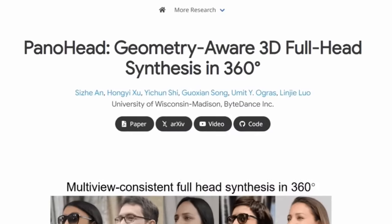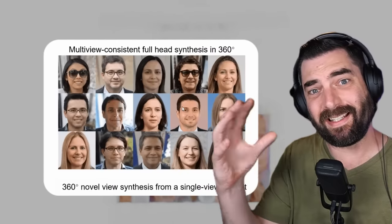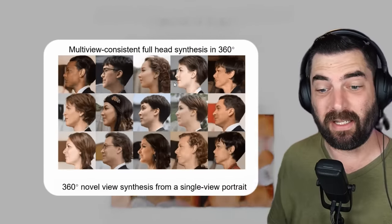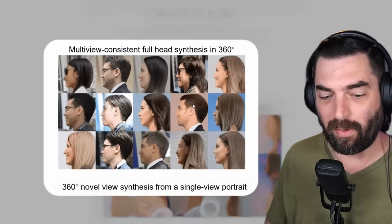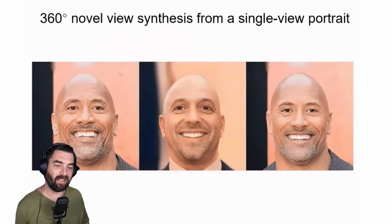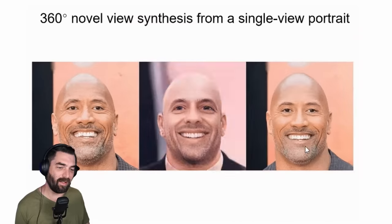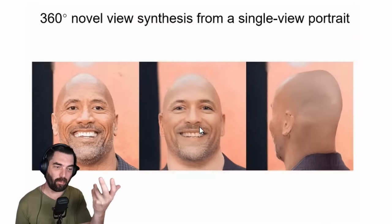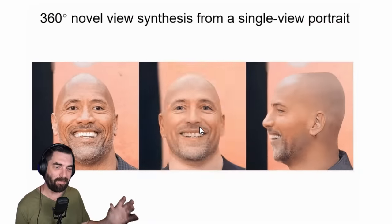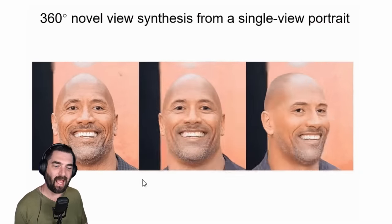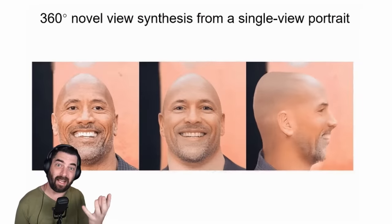Here's some new research called PanoHead, which essentially allows you to make a 3D head based on just a single image. You can see these are 3D generated heads rotating around. If we scroll down, you can see in this example there's a picture of the Rock and what it turns it into is this sort of 3D rotatable version of the Rock. Now his head shape is kind of not perfect because it's sort of guessing. What we're seeing here with this animation is essentially a GAN.